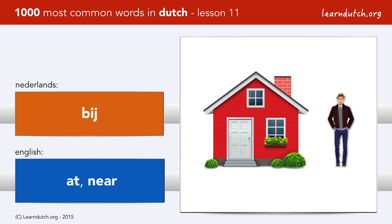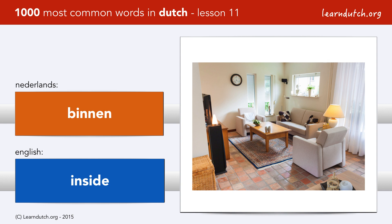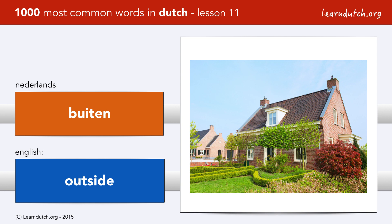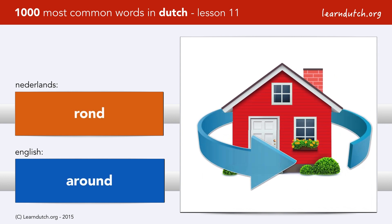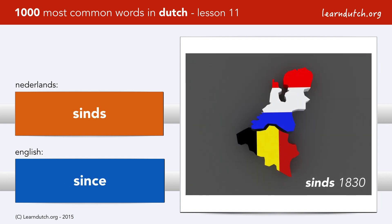Bij. Binnen. Buiten. Tegen. Rond. Since — Since 1830. Belgium is not anymore a part of the Netherlands since 1830, following the Belgian revolution.